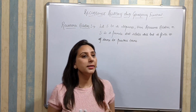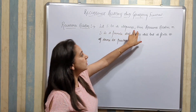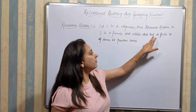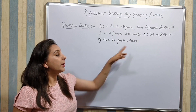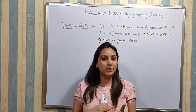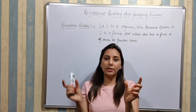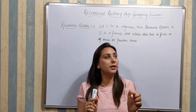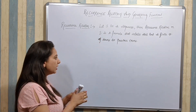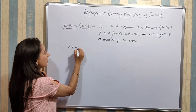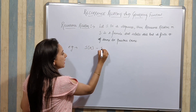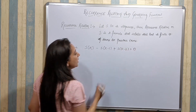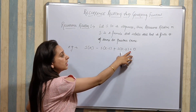We will take recurrence relation and its definition: let S be a sequence, then a recurrence relation on S is a formula that relates all but a finite number of terms to the previous term. For example, S(K) minus S(K-1) plus S(K-2) equals 0. This is an example of a recurrence relation.